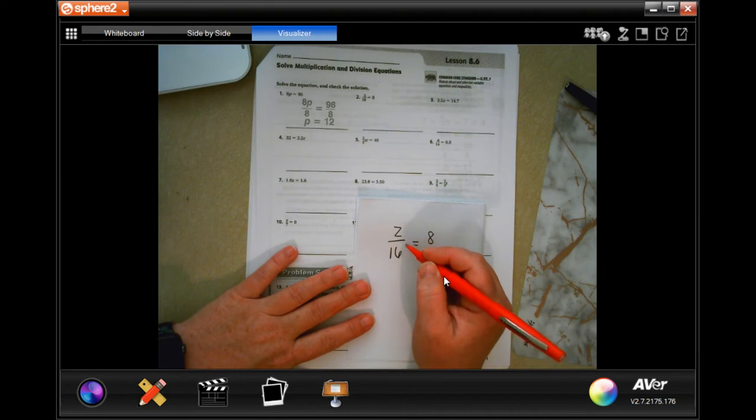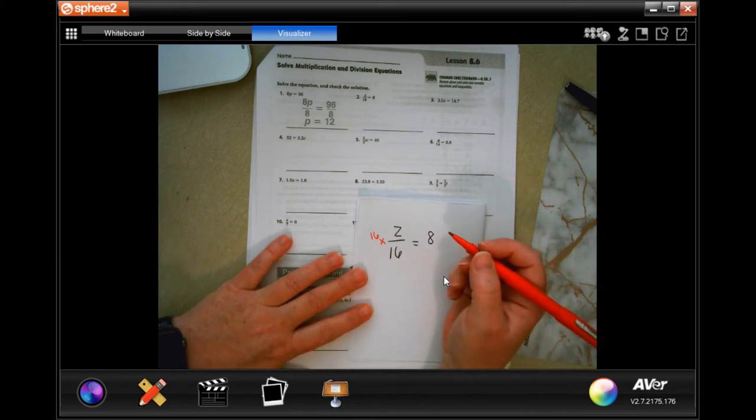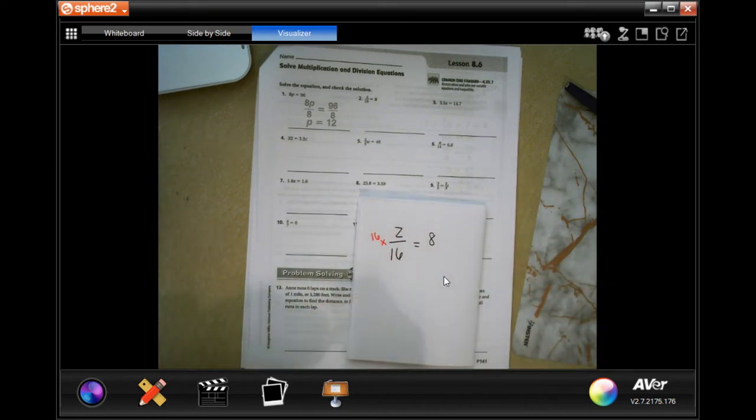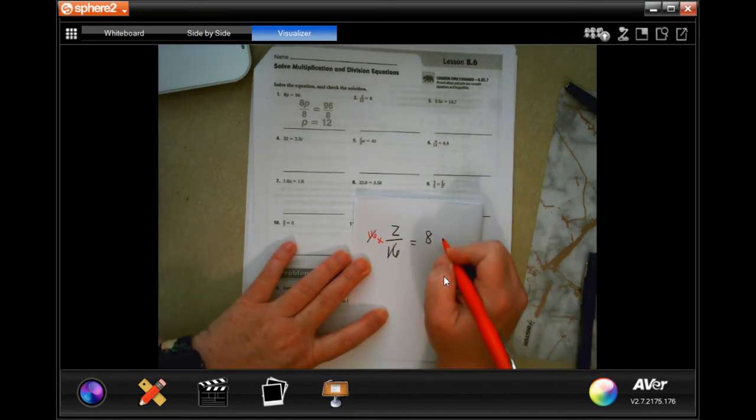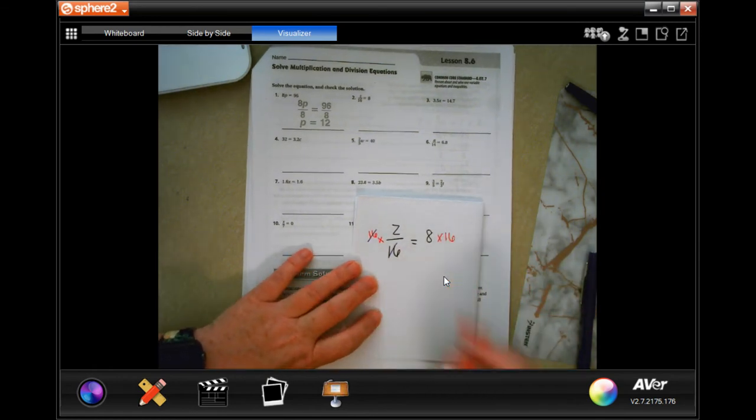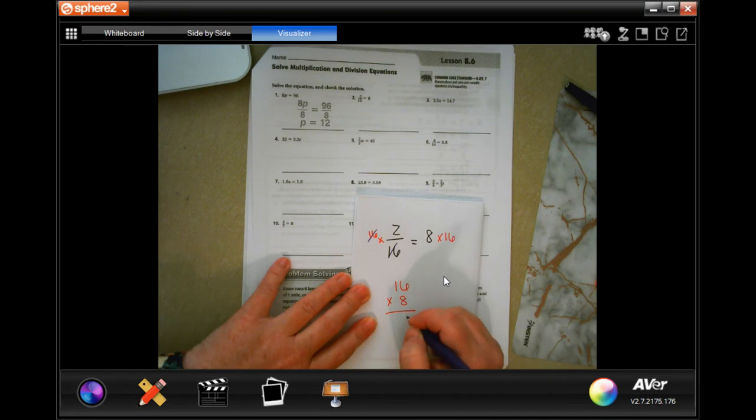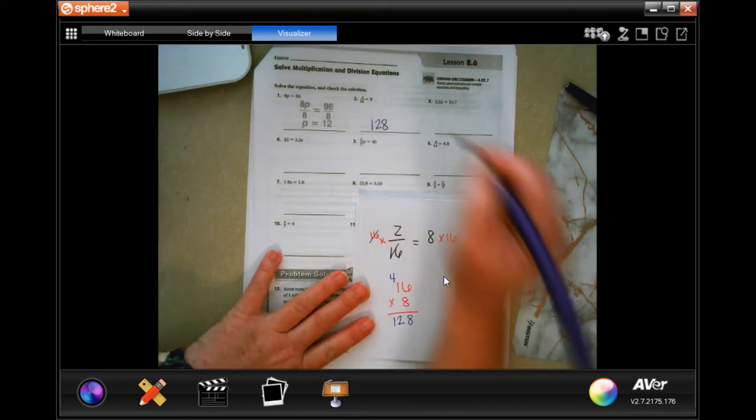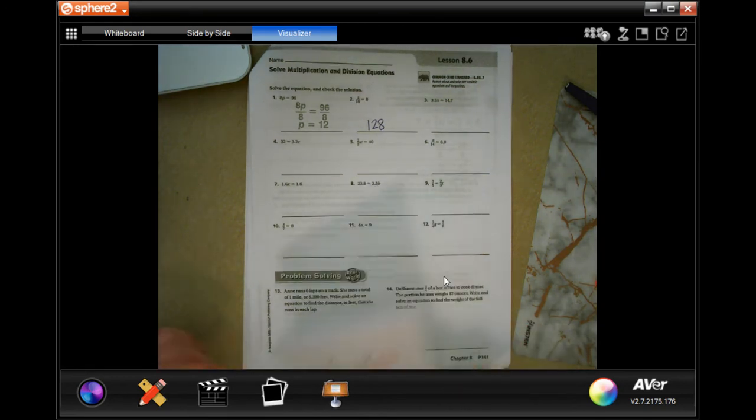So this is dividing z by 16. If we were to multiply by 16, then our 16s would cancel out. And we would also multiply by 16 over here because whatever we do to this side, we have to do to this side. So, I'm going to do 16 times 8. 8 times 6 is 48, carry our 4. 8 times 1 is 8, plus 4 is 12. So, 128. I know those fraction ones are a little bit scary. They're really not so bad, guys.